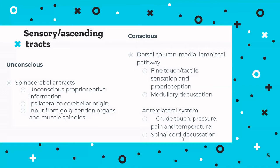Quickly on sensory tracts: you've got your unconscious spinocerebellar tracts taking information from Golgi tendons and muscle spindles, telling the brain where limbs are. Your conscious sensory ascending tracts are divided into two: the posterior dorsal column medial lemniscal pathway for fine touch, tactile sensation, and conscious proprioception; and the anterolateral system for crude sensation — pressure, pain, and temperature.